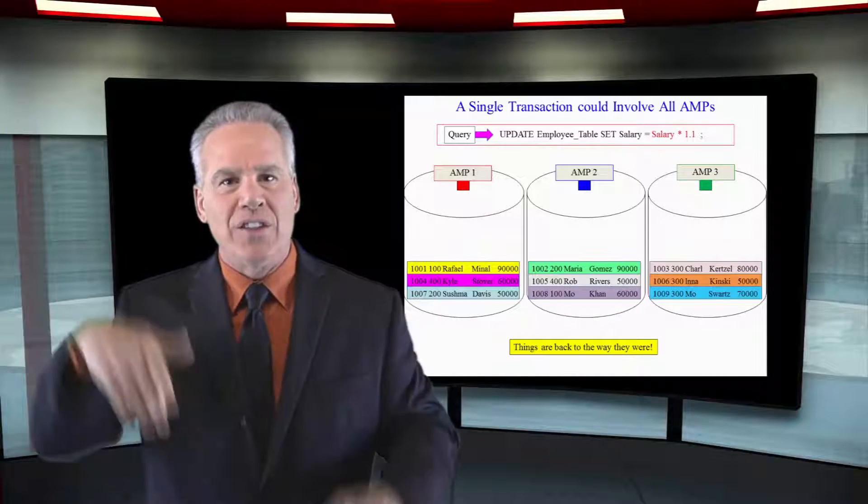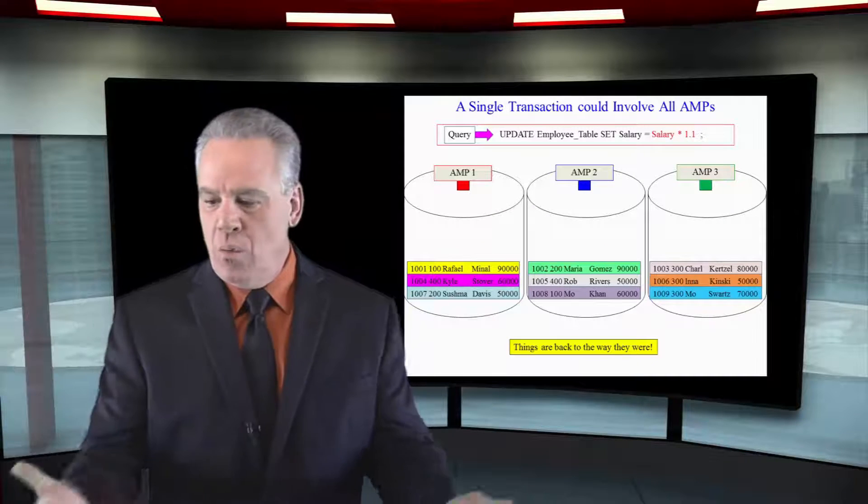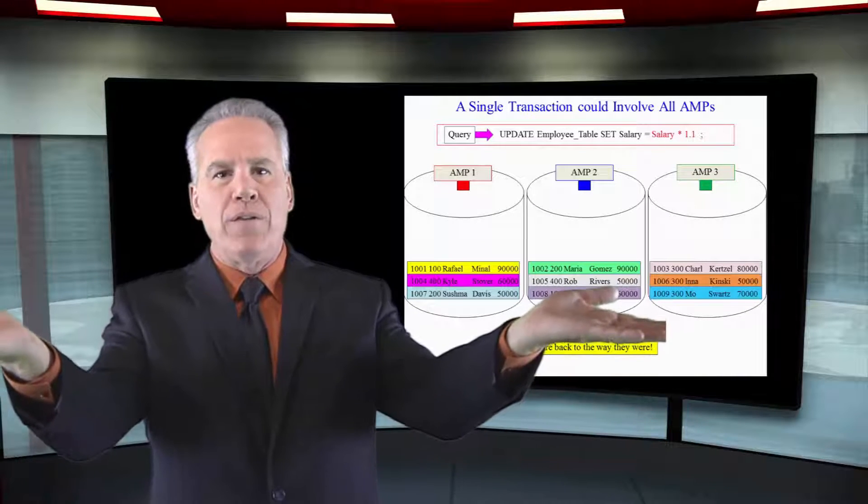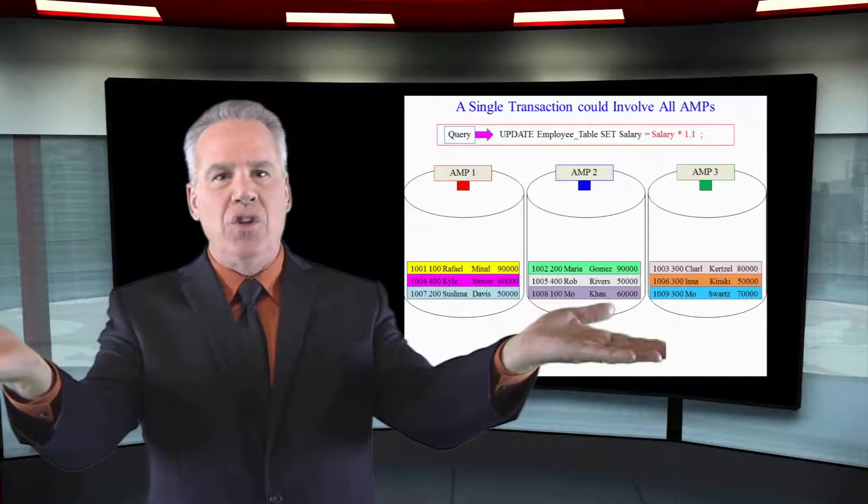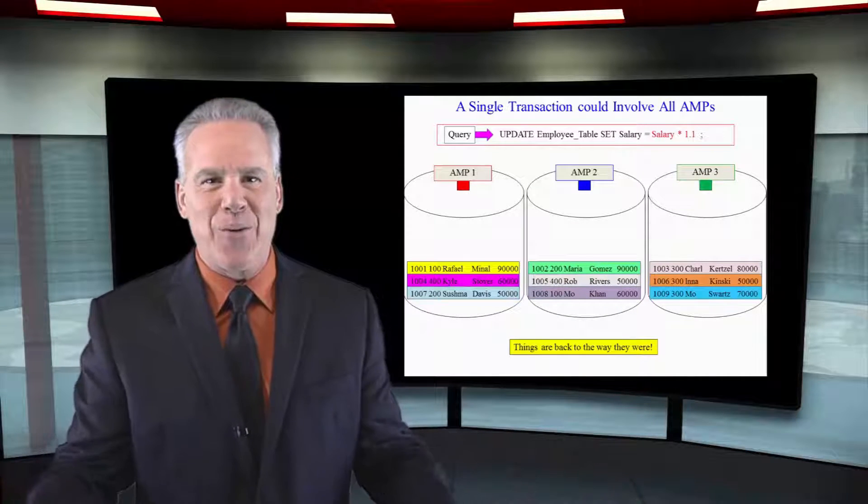Everybody gets a 10% raise. That's the transaction. When all reports are perfect, they throw away the transient journal. If there's any issues, they write things back to the way they were.